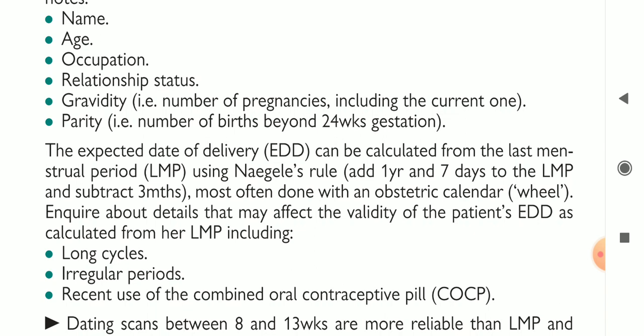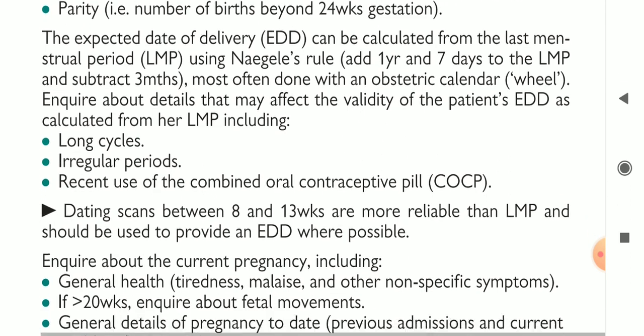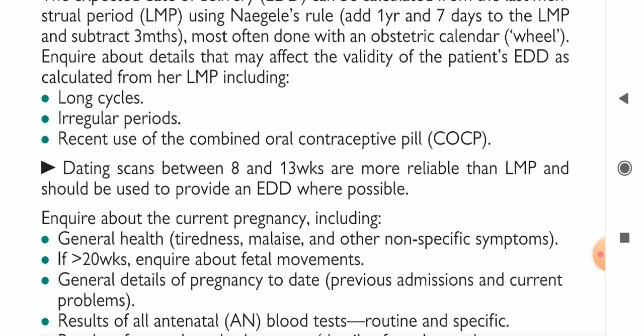With an obstetric history, we inquire about details that may affect the validity of the patient's estimated date of delivery calculated from her last menstrual period, including the length and regularity of the cycle and recent use of combined oral contraceptives. These points should be asked of the patient.